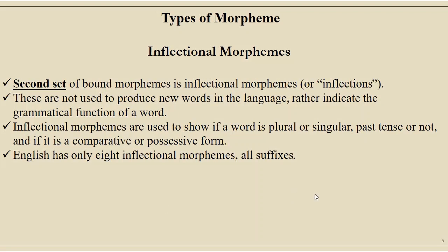The second category of bound morphemes is inflectional morphemes. This second set of bound morphemes — inflections — are not used to produce new words in the language. Rather, they indicate the grammatical function of a word. Inflectional morphemes are used to show if a word is plural or singular, past tense or not, and if it is a comparative or possessive form. English has only eight inflectional morphemes and they are all suffixes.